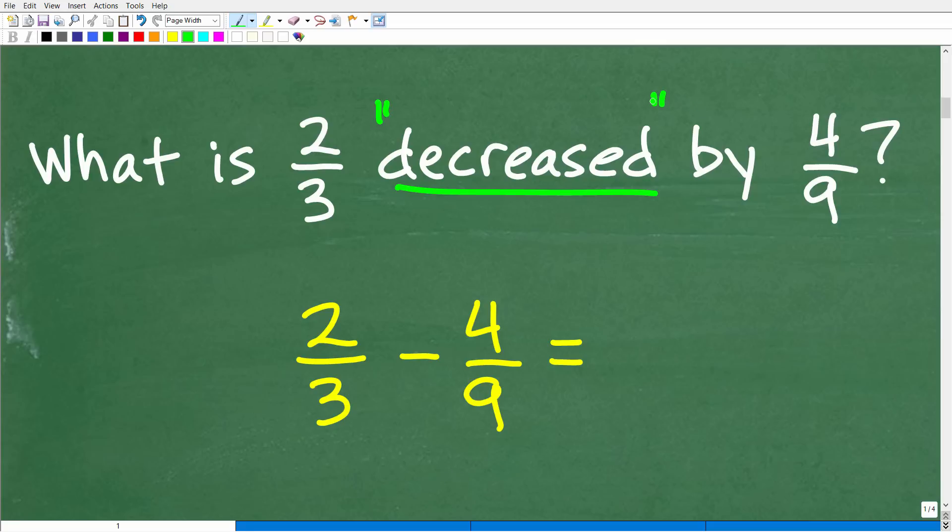But again, you know, we're dealing with fractions. That can be kind of confusing already enough for some of you out there. So, you know, if you were like, I'm not quite sure, use an easier example, kind of like what I just did here with 10 and two. Okay, so again, we just saw that we're going to be subtracting. So if we take 10 and we decrease it by two, that means 10 minus two. So in this case, we're going to take two thirds and we're going to decrease it by four ninths. So this means take two thirds and subtract four ninths away from it. So we have two thirds minus four ninths. So this is what we're going to have to figure out right now.